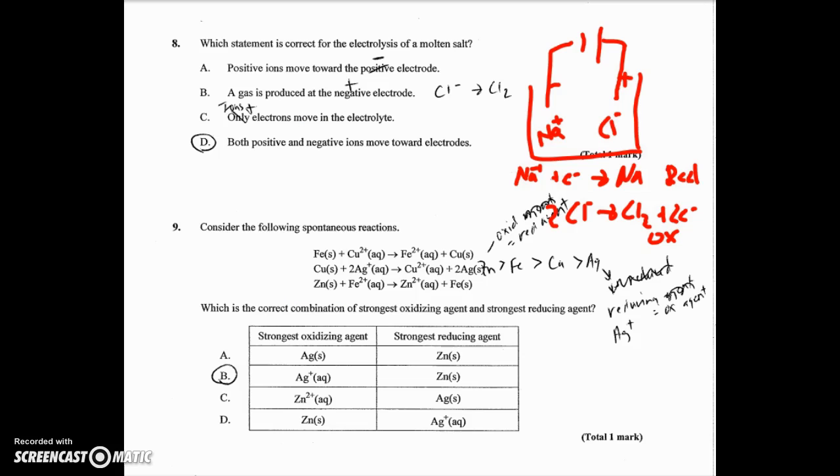Number eight, which statement is correct for the electrolysis of a molten salt? So molten salt means you have Na+ and Cl-. At least NaCl is an easy one to use. And so if I draw a quick sketch, I should be able to figure out that the positive sodium is going to move toward the negative end. The negative chlorine is going to move toward the positive end, and sodium is going to gain electrons or be reduced. Chlorine is going to lose electrons or be oxidized. So the positive end is my anode, and the negative end is my cathode. So it says positive ions move toward the positive electrode. That's not true. It move toward the negative electrode. Opposites attract. A gas is produced at the negative electrode. Cl2 would be the gas they're talking about, but Cl2 is going to the positive electrode. It says only electrons move in the electrolyte. That's not true. You've got electrons being moved by the battery and the wire, but those are ions that are moving in the electrolyte. And then D, both positive and negative ions move toward electrodes. That is the true statement, because sodium moves one direction and chlorine ion moves the other direction.